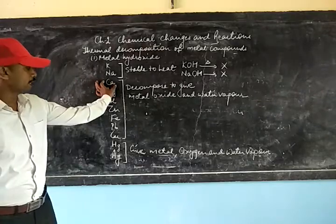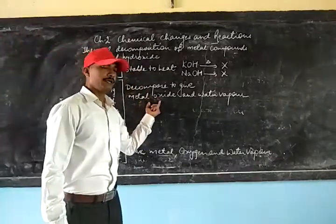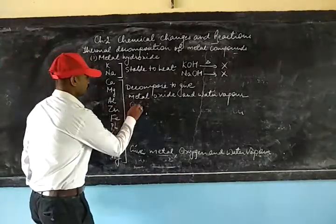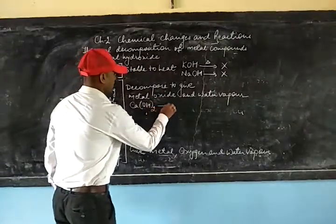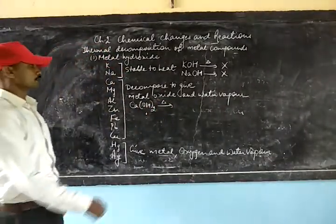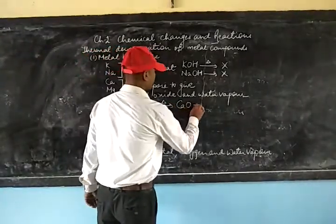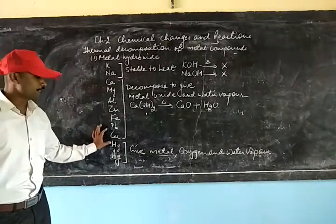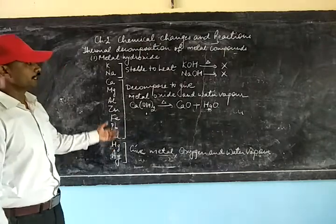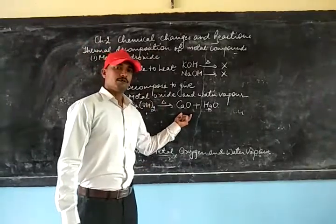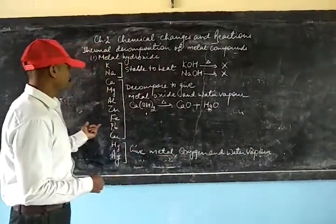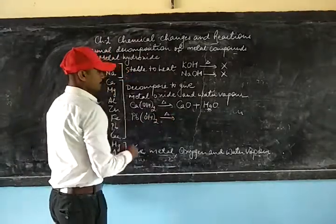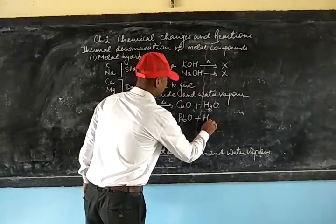However, hydroxides of metals from calcium to copper decompose to give the metal oxide and water vapor. For example, calcium hydroxide Ca(OH)₂ when heated decomposes to give calcium oxide CaO plus water vapor H₂O. Any hydroxide of metals from calcium to copper will decompose in the same manner — forming the respective metal oxide along with water vapor.